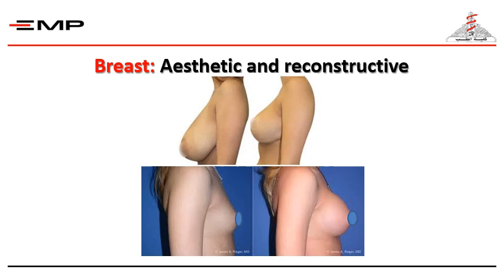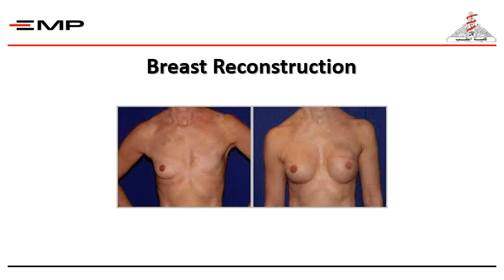The breast is also divided into aesthetic and reconstructive procedures. Aesthetic procedures include breast reduction or breast lifting, and breast augmentation by silicone implant. Reconstructive procedures include breast reconstruction after tumor excision and mastectomies, where we build up a new breast and a new nipple-areola complex.